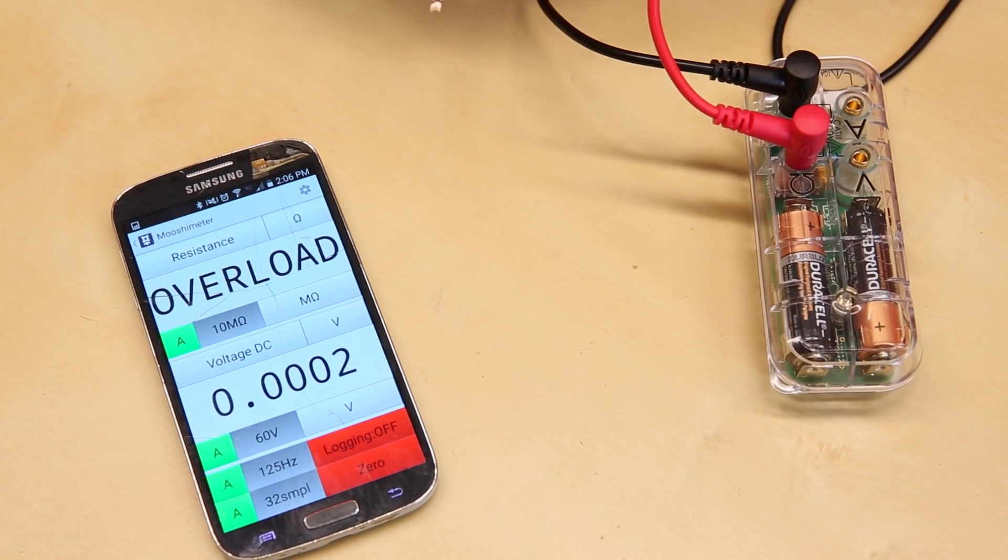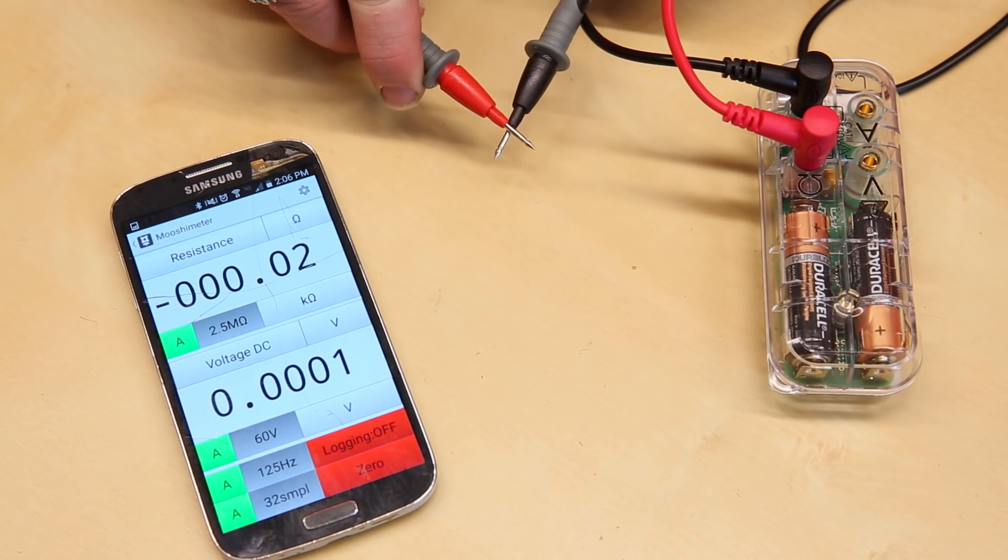Just to test the meter, we can switch over to resistance mode, and then touch the two probes together, and it should read zero ohms.